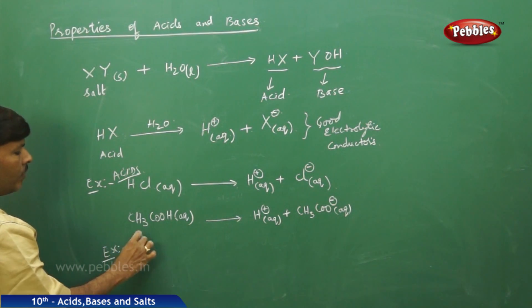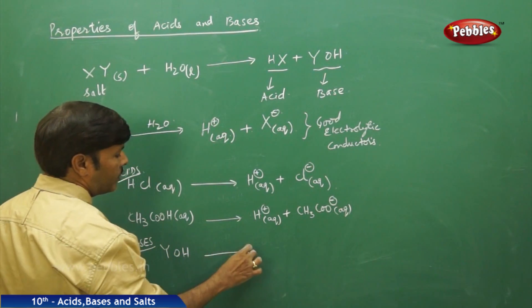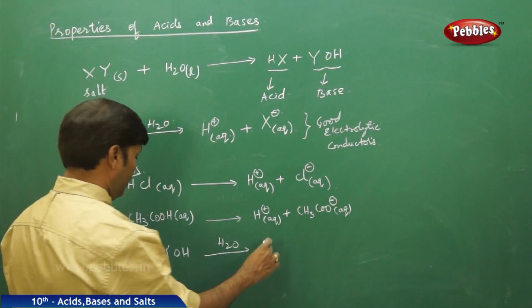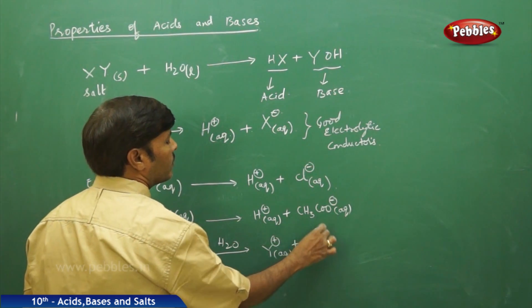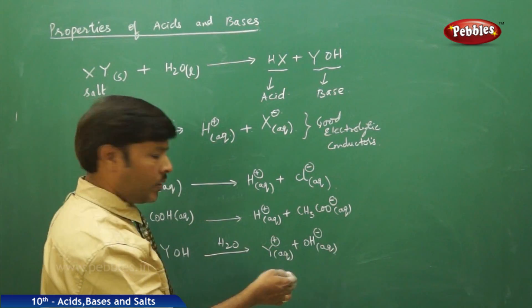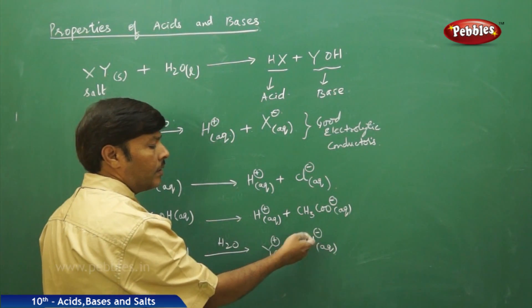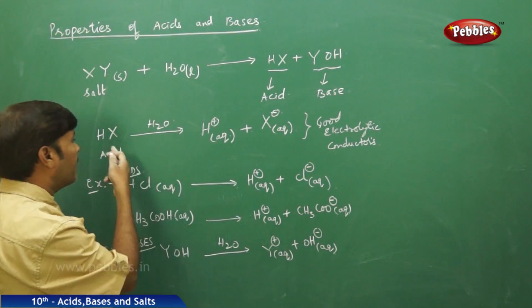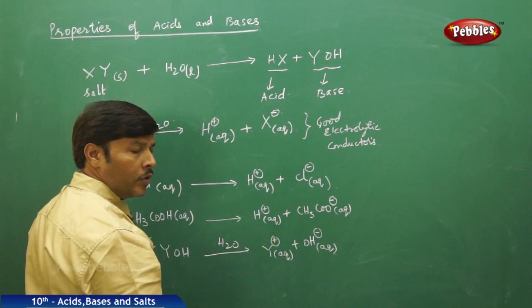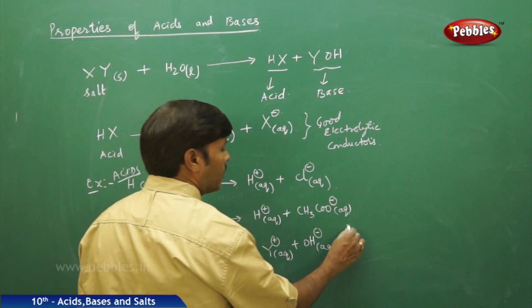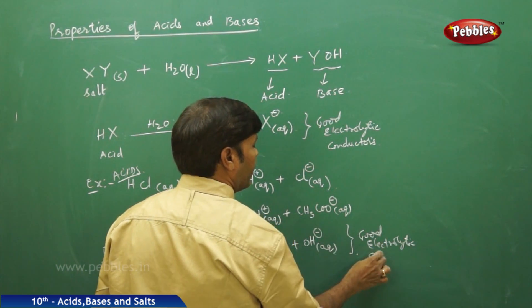For bases, the general formula is YOH. YOH in the presence of water dissociates to give Y+ (aqueous) plus OH- ions (aqueous). Because it is able to give OH- ions, all basic substances — the bases — are characterized by furnishing OH- ions, and acids are characterized by furnishing H+ ions. Because they are able to furnish the OH- ion and a cation Y+, bases are also good electrolytic conductors.